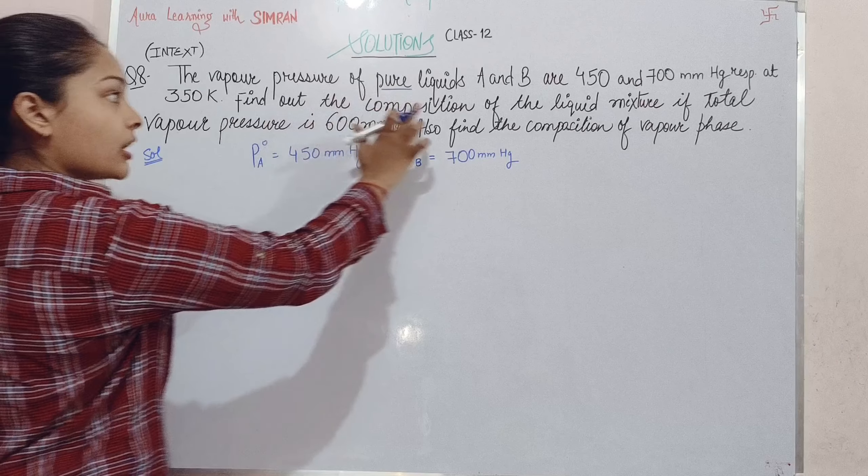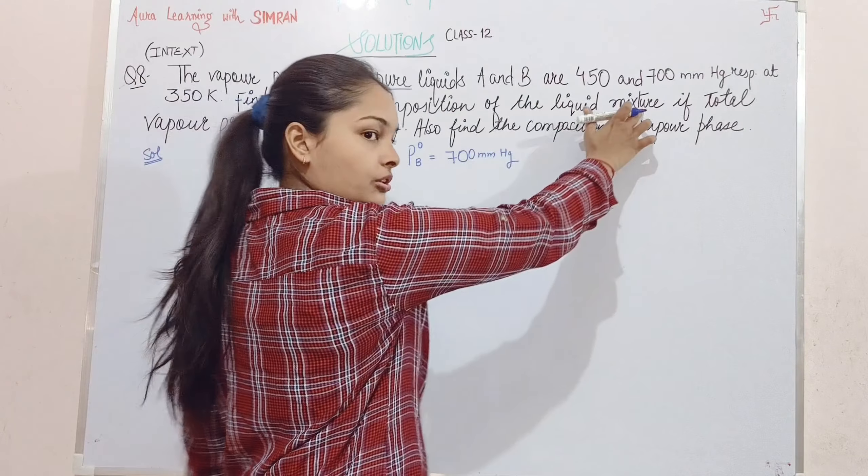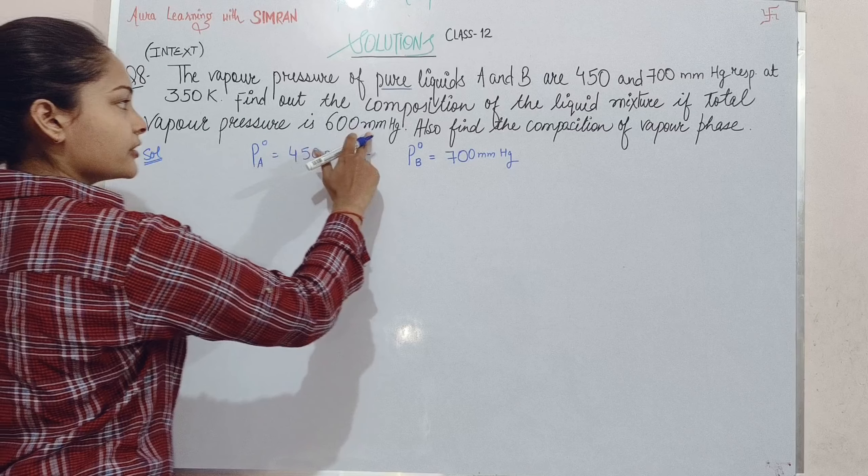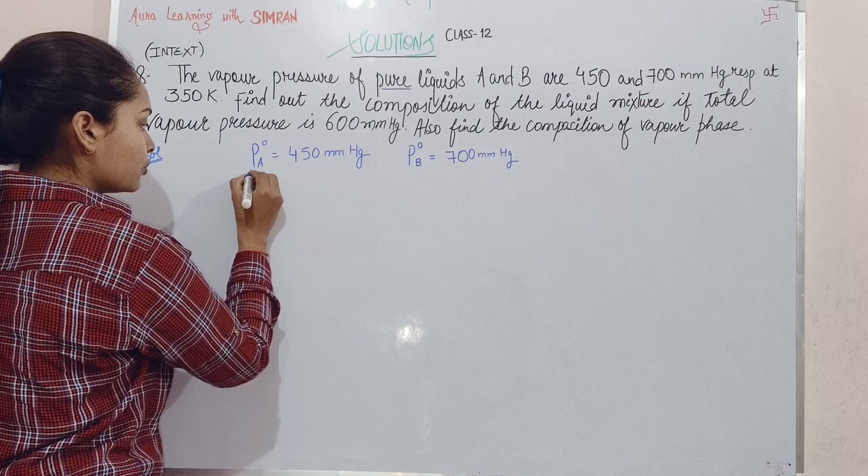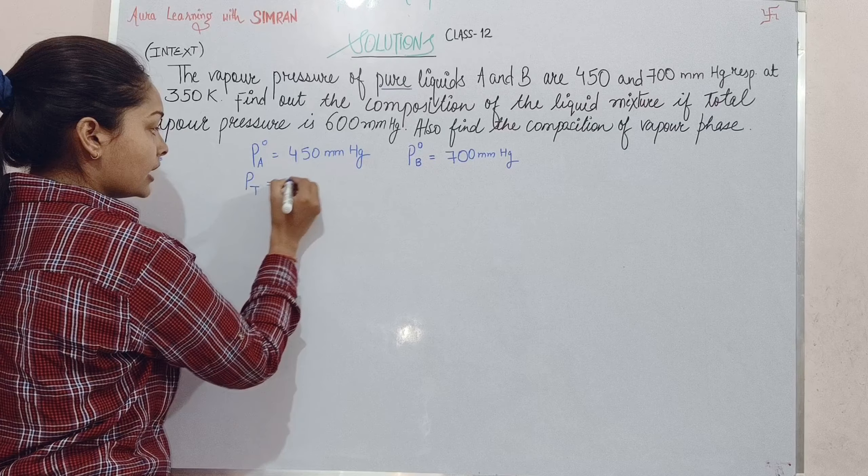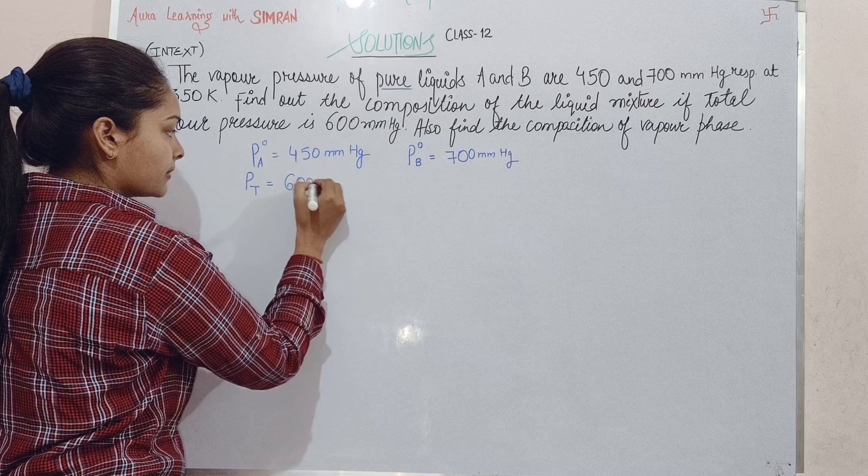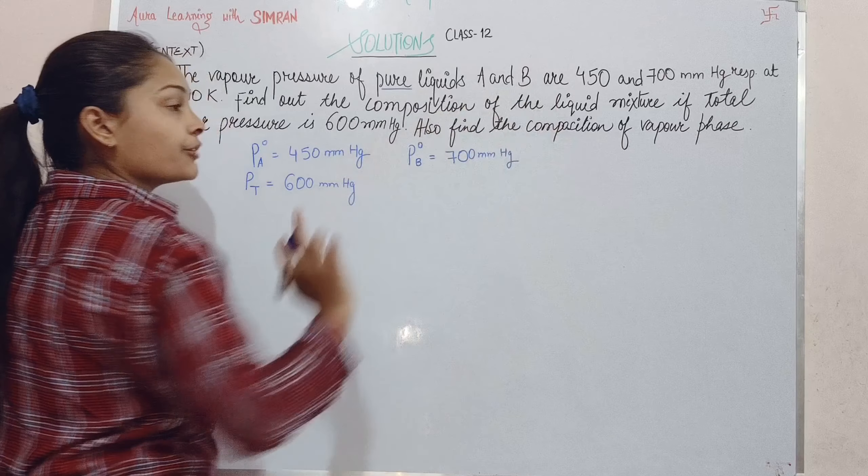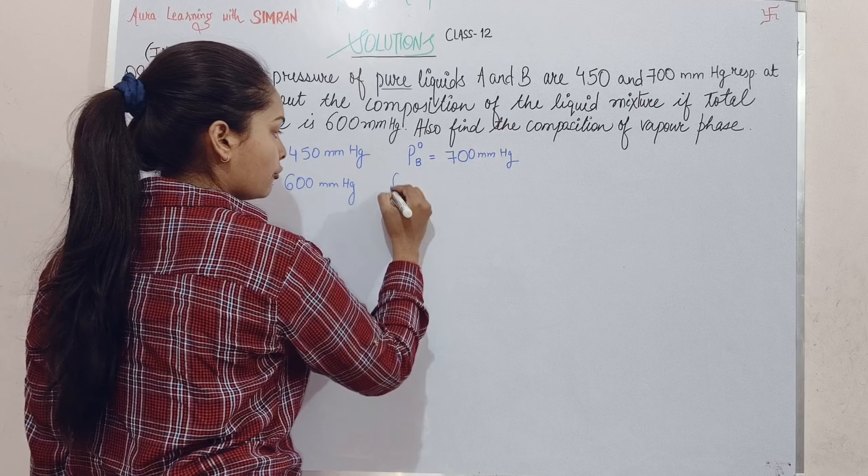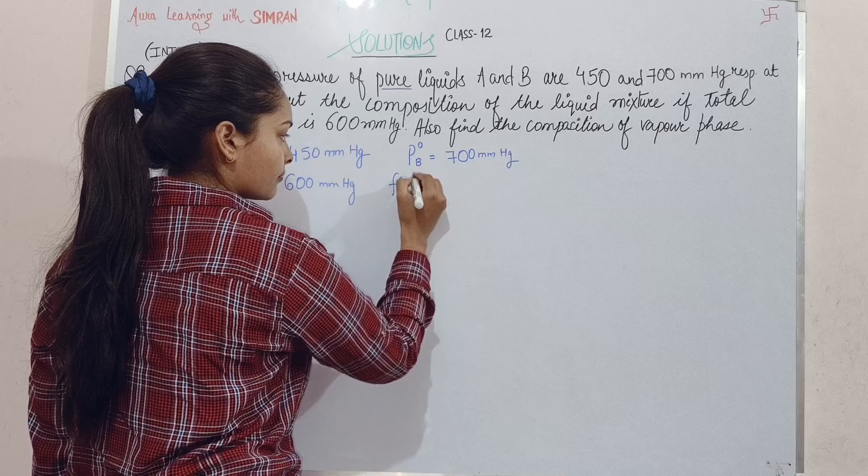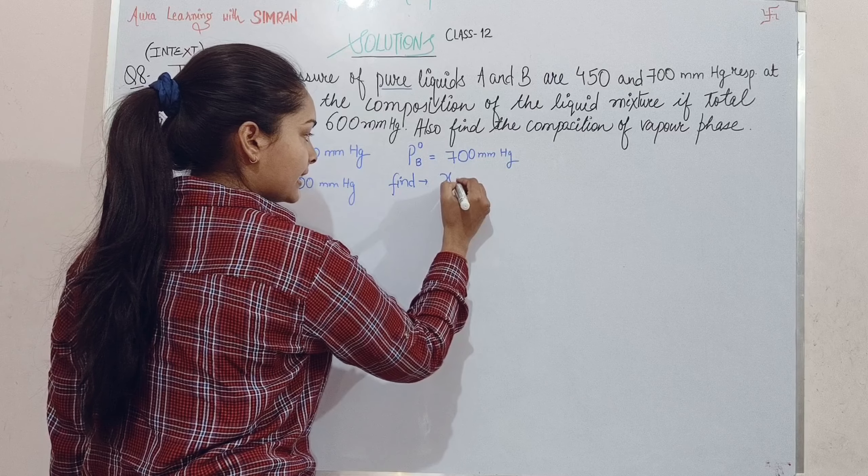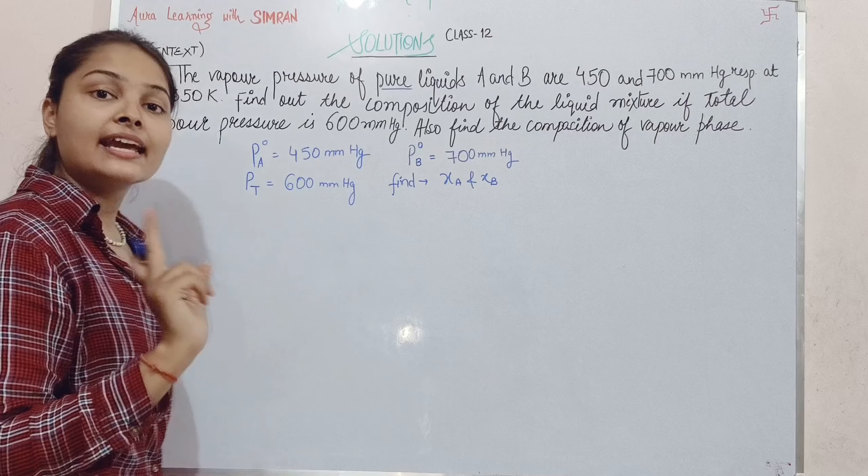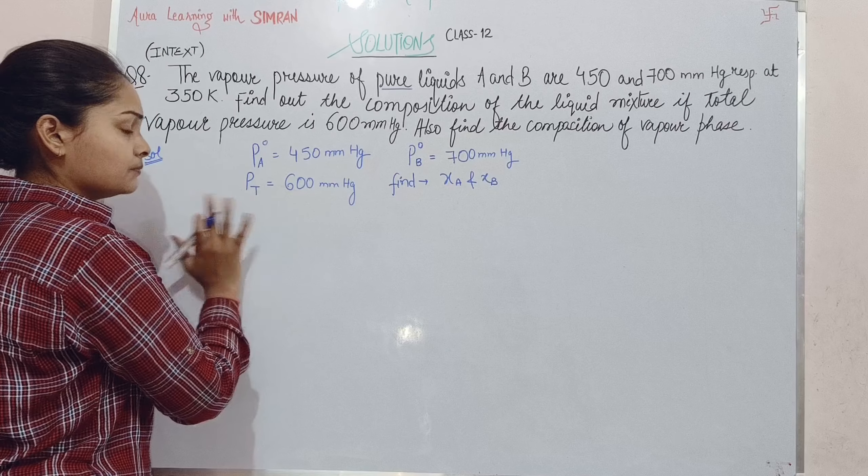Find out the composition of the liquid mixture if total vapor pressure is 600 mmHg. First part is composition of the liquid phase - we need to find χA and χB.